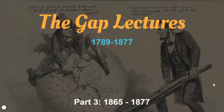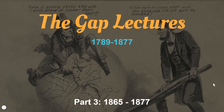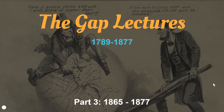Welcome to part three of our Gap Lectures, our final look at our time period of 1789 to 1877. We're going to conclude today by looking at the period of 1865 to 1877, the period known as Reconstruction. Of course, this name comes from the end of the Civil War, having to reconstruct the Union, having to put back together the pieces.